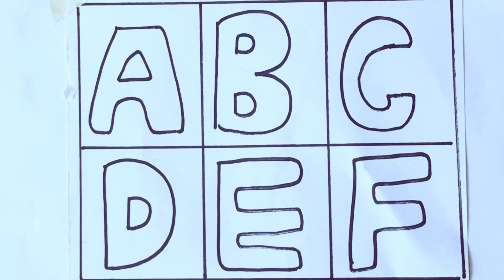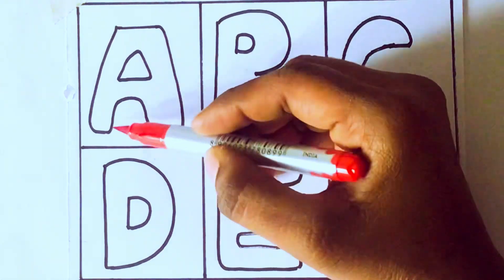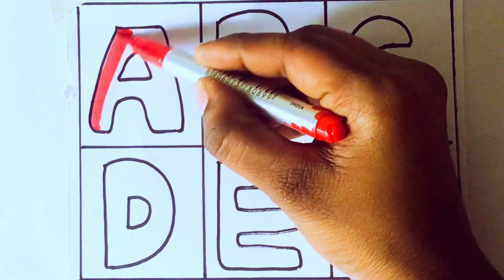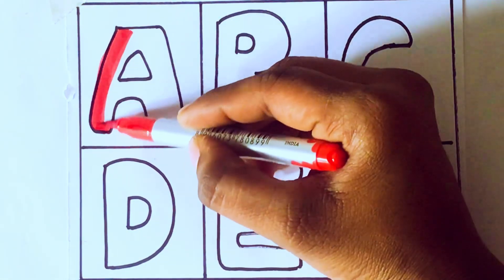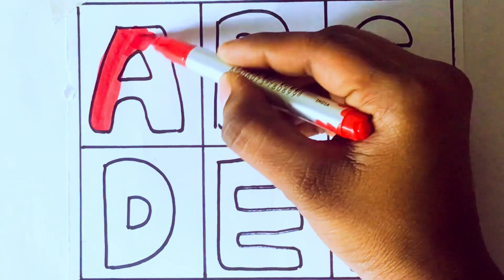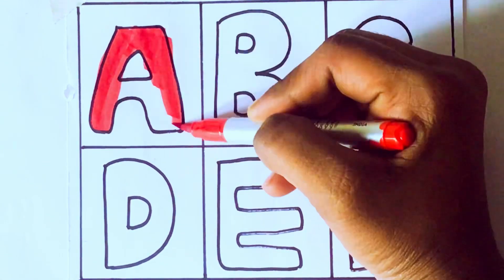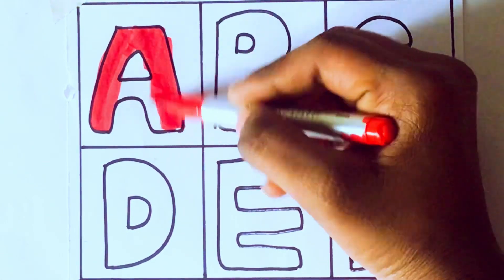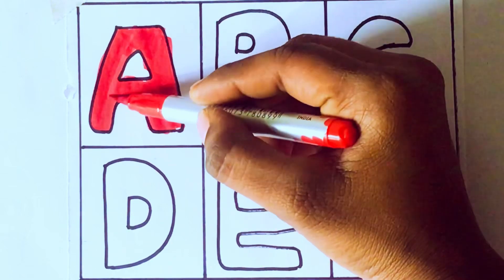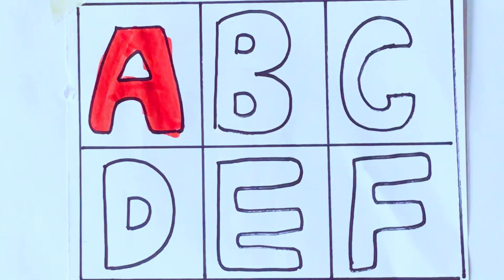Let's draw the alphabets. Red color. A. First of all, A. A for Apple. A-P-P-L-E, Apple. A for Apple.